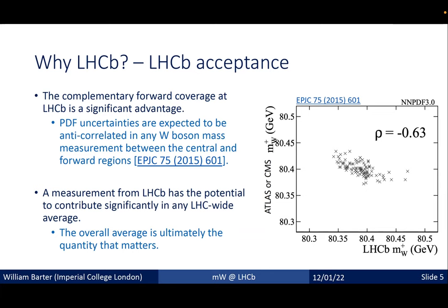The significant forward coverage of LHCb offers a real advantage. If you extract the W boson mass from a measurement of lepton p_T in W boson decays, at ATLAS or CMS you get a spread of values due to imperfect knowledge of the proton internal structure. At LHCb you also get a spread, but crucially these spreads are anti-correlated. This means that in any LHC-wide average, a measurement from LHCb will significantly cancel uncertainties from ATLAS or CMS and give a much better overall combination.